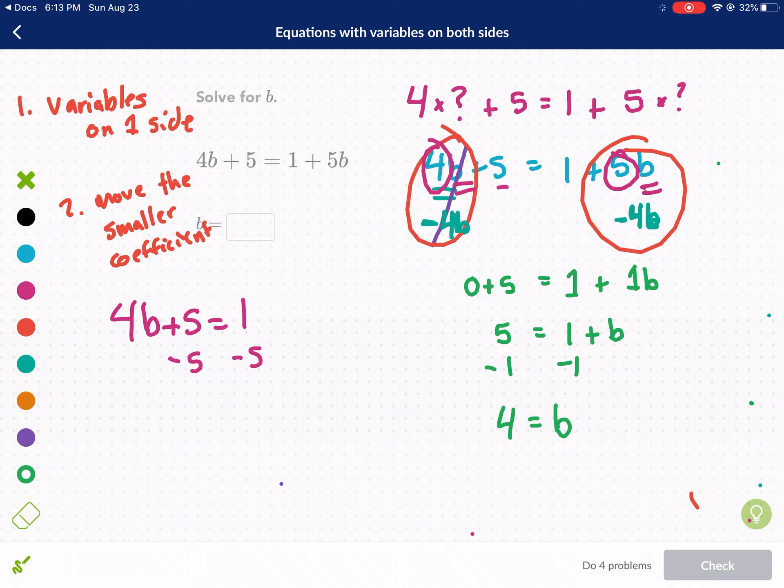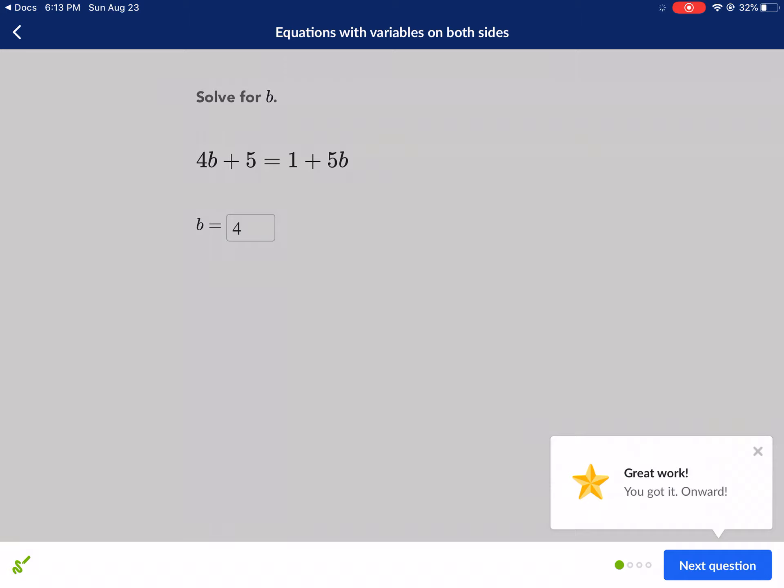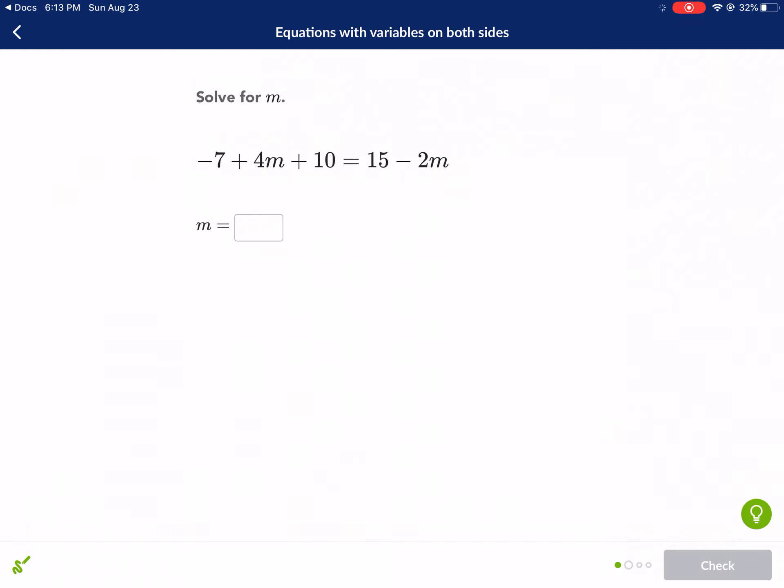You can always check your answer by plugging it back in. You often can do this as you get into higher level math courses. Checking with two-step equations happens a lot less but it's always a good strategy. I recommend that if you're unsure. And we check our answer and we got it. Moving on to the next one.